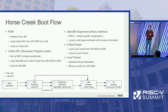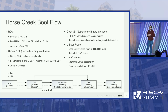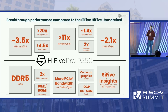Here is a high-level overview of how Horse Creek boots up. We have a dedicated boot ROM, which boots up and passes control to the secondary bootloader. The secondary bootloader then jumps to the Linux kernel, finally bringing up the operating system.